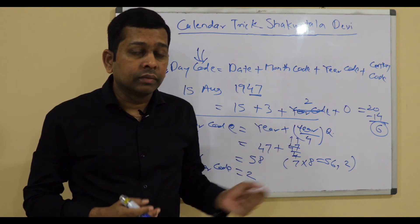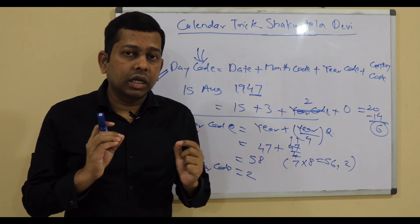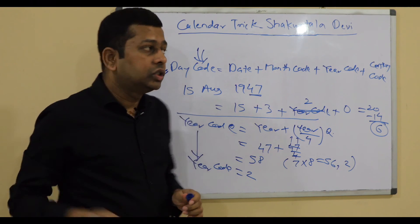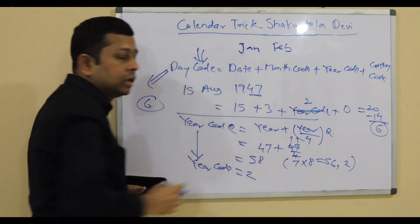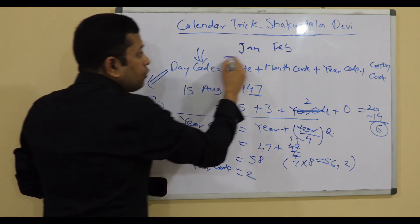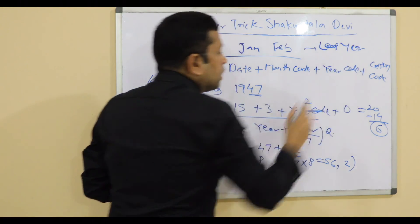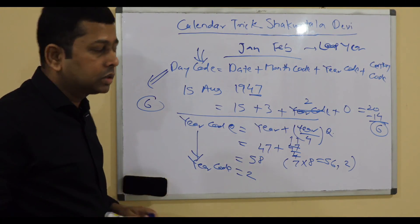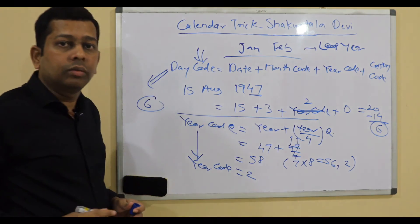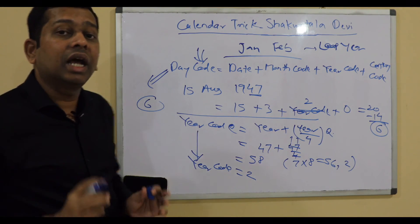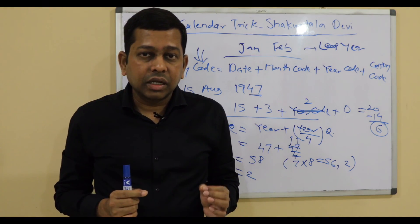There is one more thing to remember: if somebody gives you a date in January or February of a leap year — leap year only, and only January and February, not other months — then you need to deduct one from the day code answer you get. That will be your corrected day code.